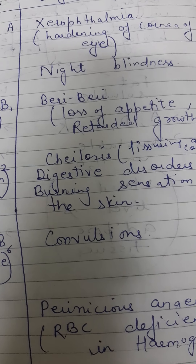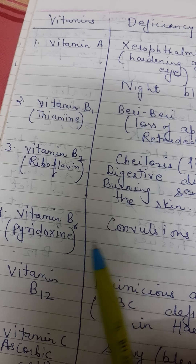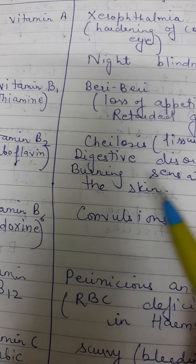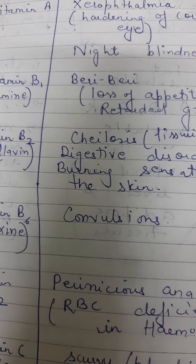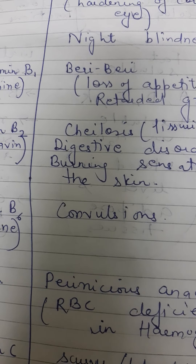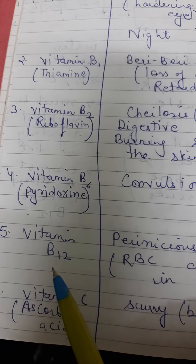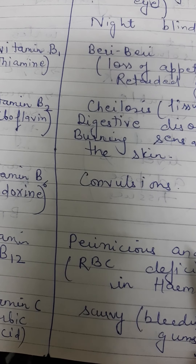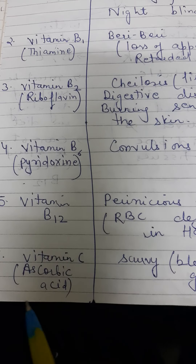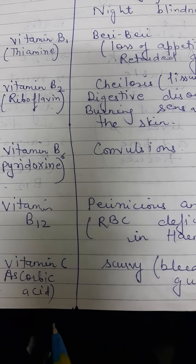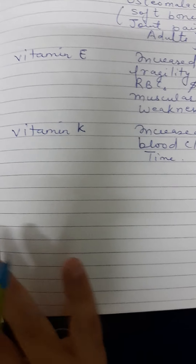Vitamin B6 deficiency causes symptoms including burning sensation of the skin. Vitamin C, also known as ascorbic acid, is associated with the deficiency disease scurvy, in which bleeding occurs.